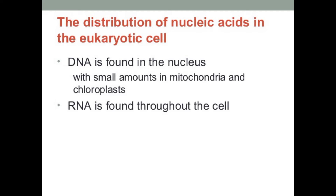Regarding the distribution of nucleic acids in eukaryotic cells: DNA is found in the nucleus, with small amounts in mitochondria and chloroplasts. About 90% of DNA is present in the nucleus and about 10% in the mitochondria and chloroplasts. RNA is found throughout the cell.